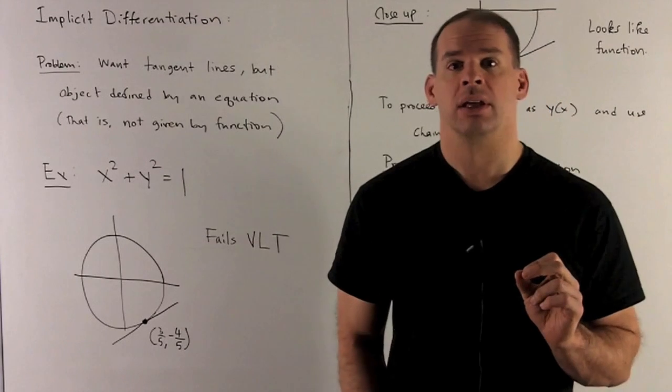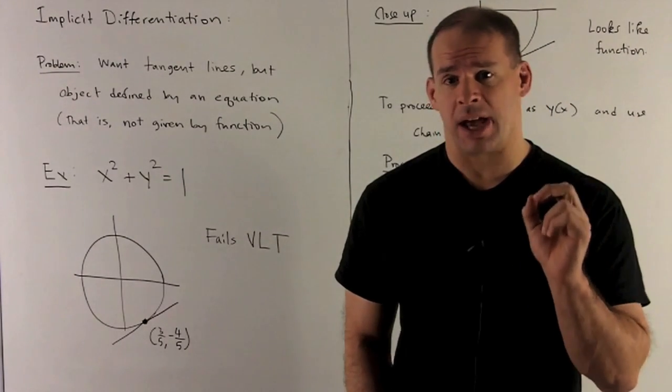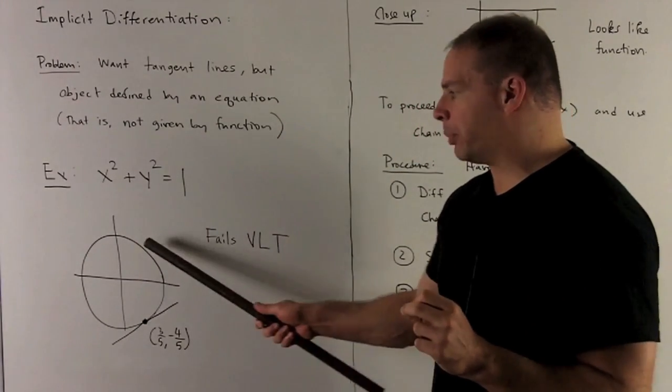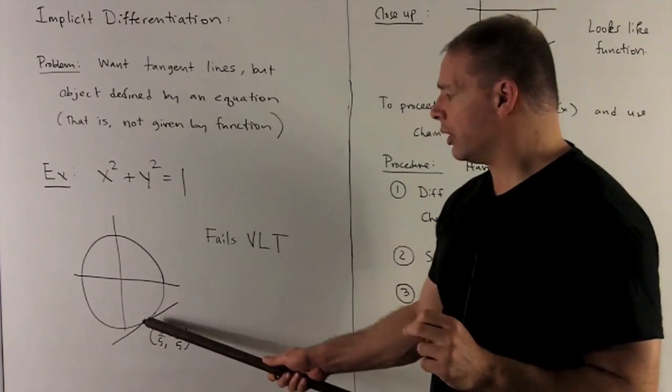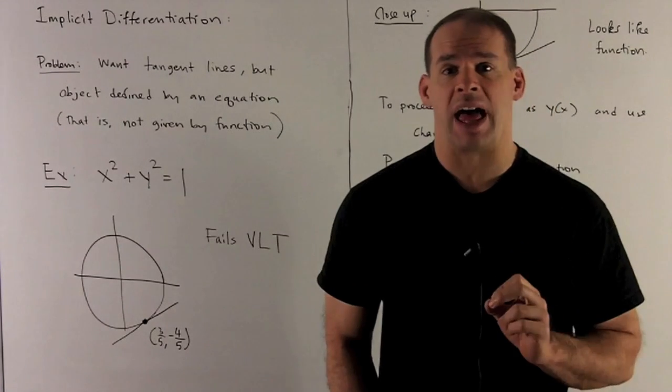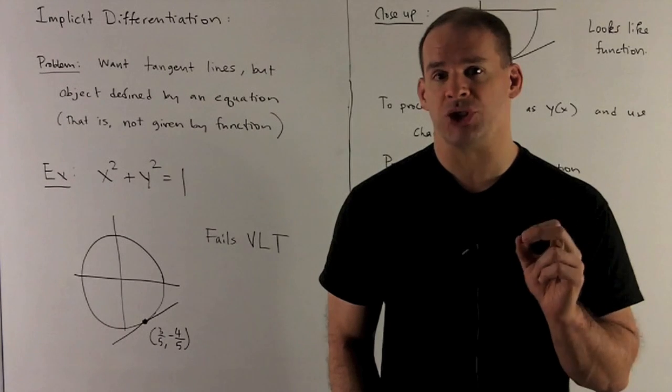If I draw vertical lines, it's going to hit the graph in more than two places. Now we would like to be able to take tangent lines to this object anyway. Note we can still talk about if you fix any point on the unit circle, tangent line totally makes sense. It's just the best fitting line to our graph.